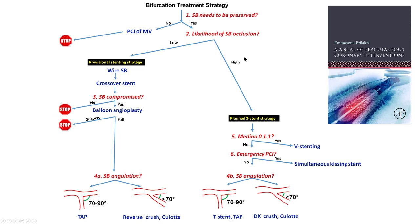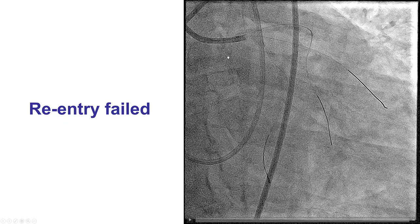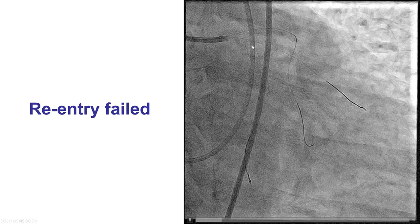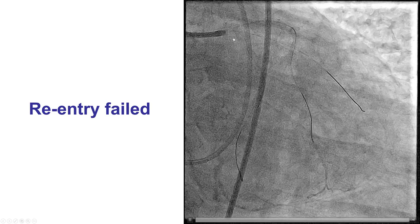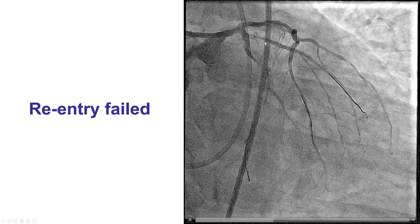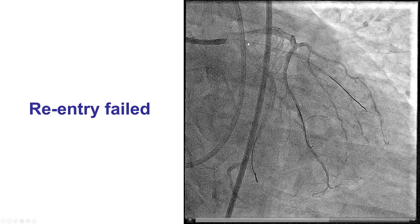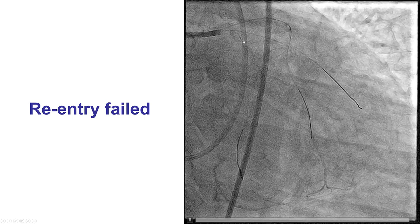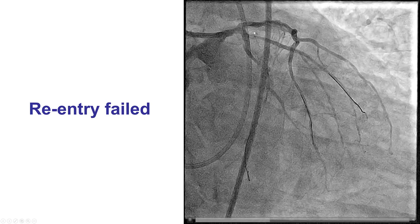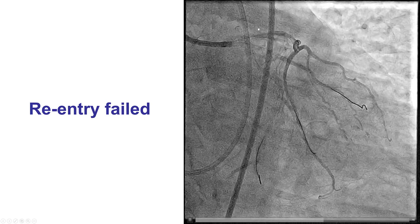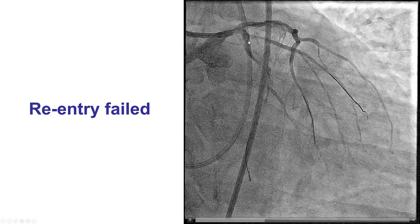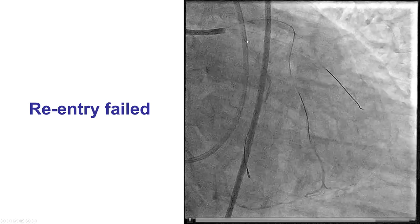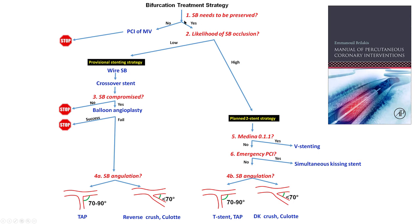We decided to treat the bifurcations. We have two adjacent bifurcations: the bifurcation of obtuse marginal one with the circumflex, and the distal left main bifurcation into the LAD and the circumflex, which are very close to each other.